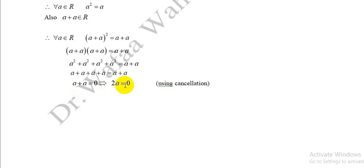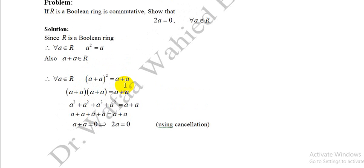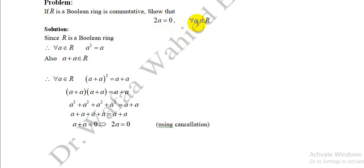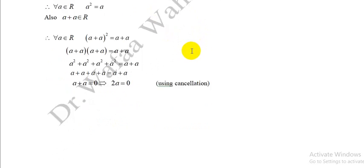In summary, if R is a boolean ring, then R is commutative and 2a = 0 for all a ∈ R.